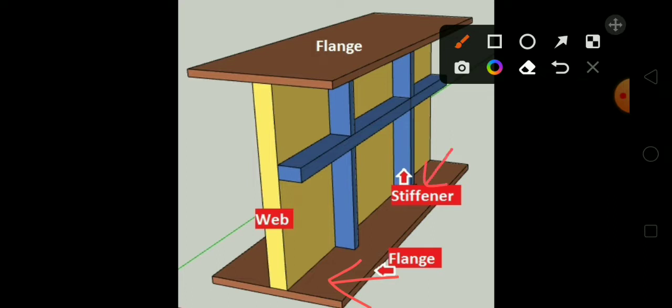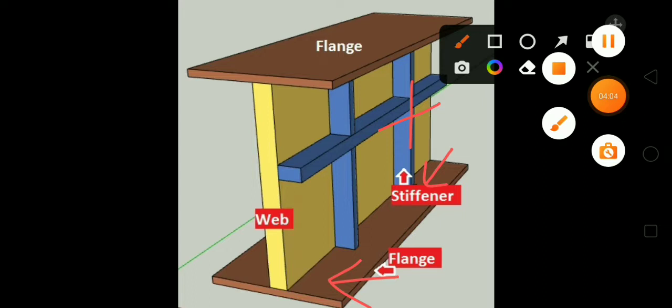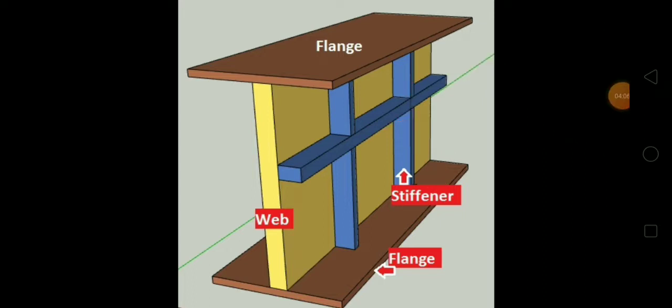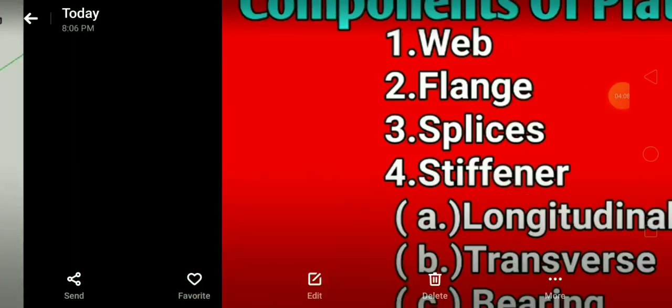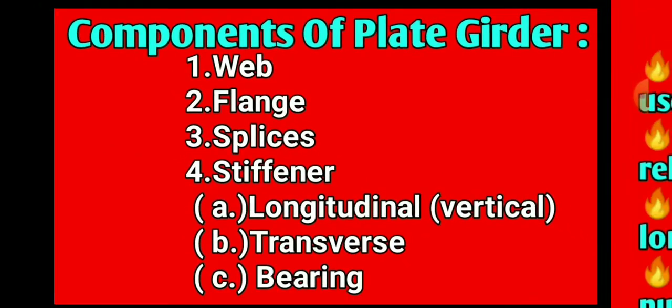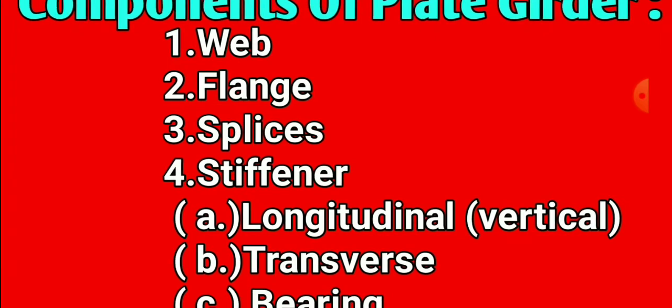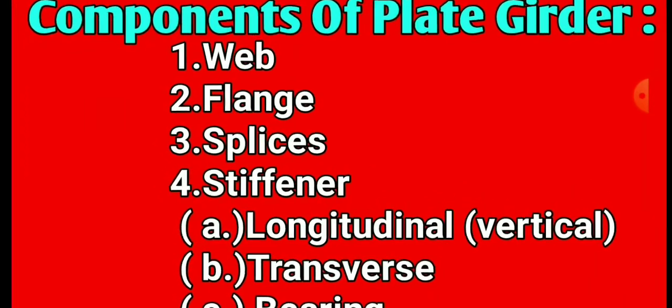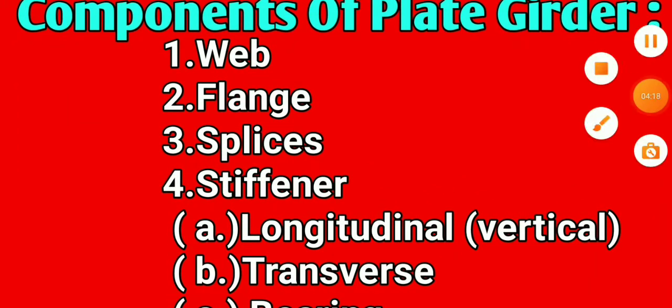And I already told you that stiffener is horizontal or vertical. Okay, so these are the component of plate girder. Let's see in next photo. So here I can show you component of plate girder. We already discussed about this.